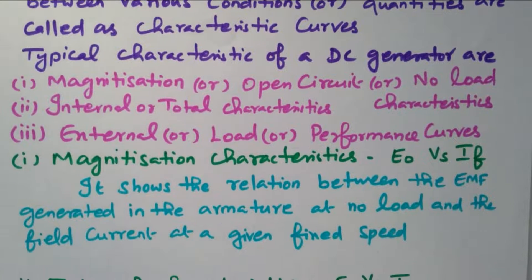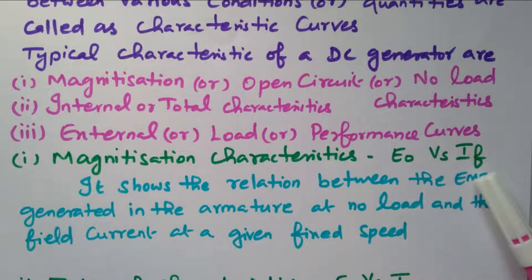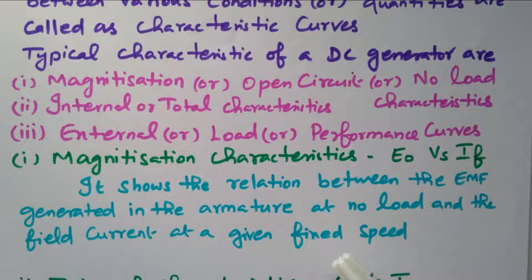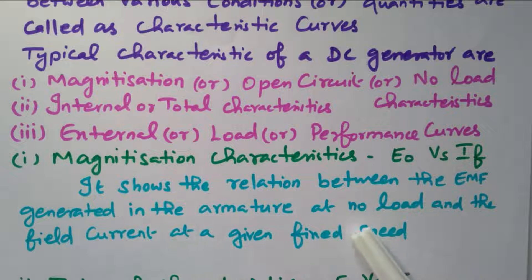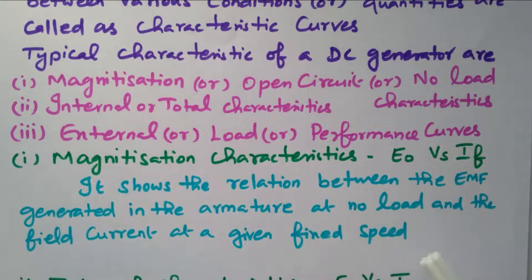In the magnetization characteristics, it is the graph drawn between no-load EMF and field current. It shows the relation between the EMF generated in the armature at no load and the field current, at a given fixed speed without load. The relation between E-naught and IF is given by the magnetization or no-load or open circuit characteristics.